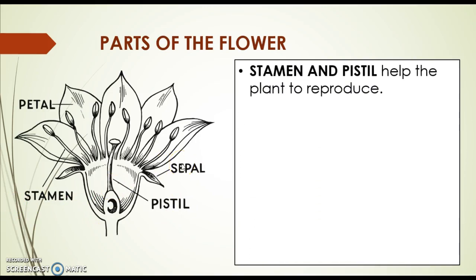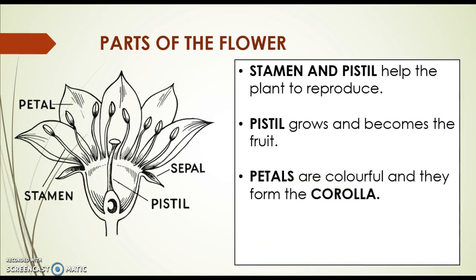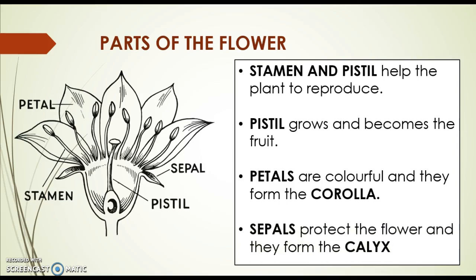Okay, so the stamen and pistil help the plant to reproduce. The pistil grows and becomes the fruit. The petals are the colorful part of the flower and they form the corolla. And the sepals protect the flower and they form the calyx.